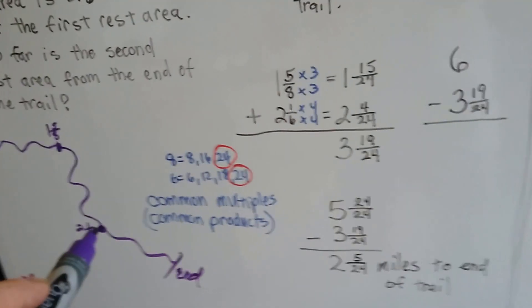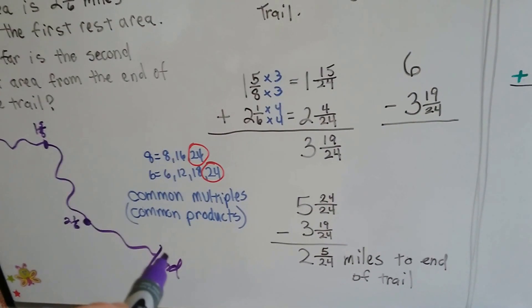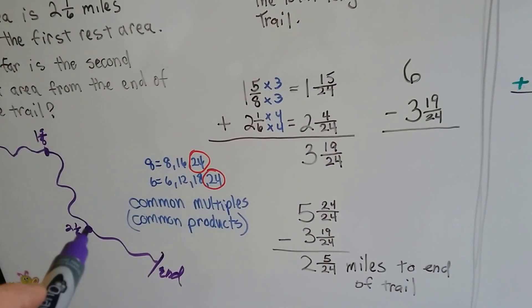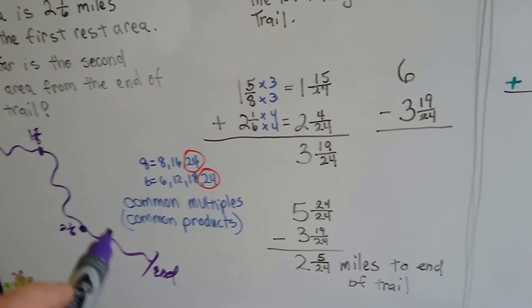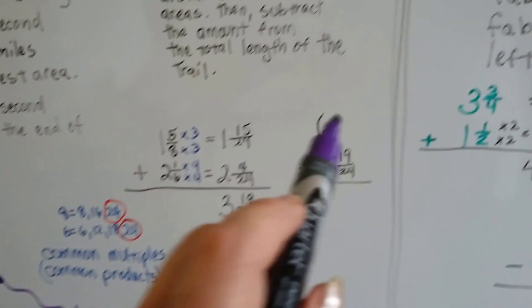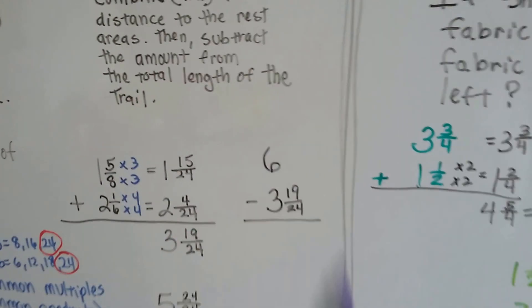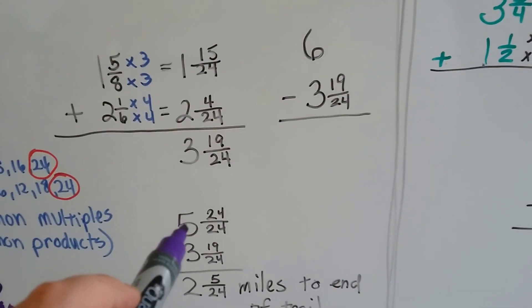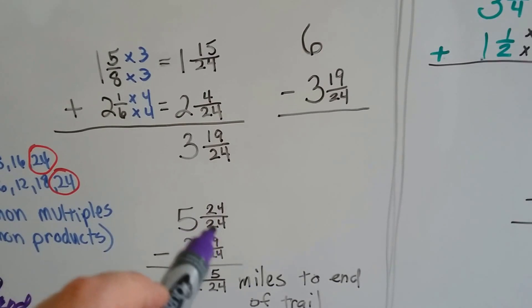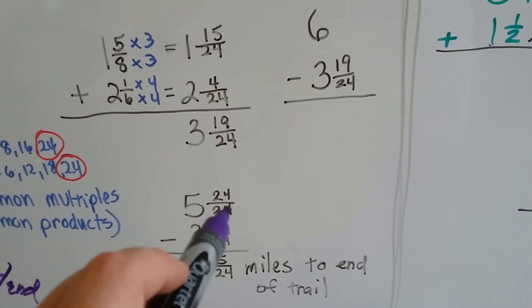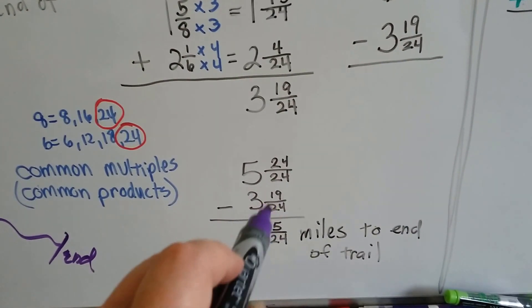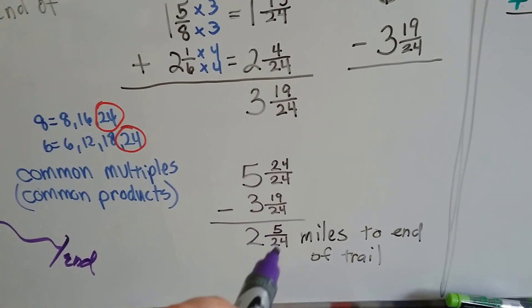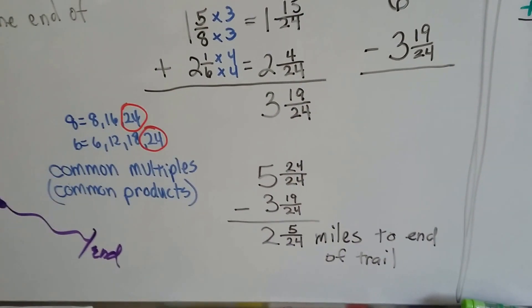Now, if we know the total trail is six miles, we subtract three and nineteen twenty-fourths from six to find the remaining distance. Except there's no fraction in six, so we turn it into five and twenty-four twenty-fourths, because twenty-four twenty-fourths equals one. Now we can take three and nineteen twenty-fourths from it and get two and five twenty-fourths miles to the end of the trail.